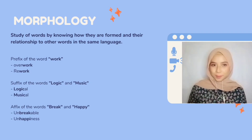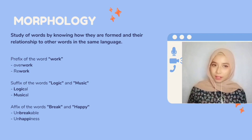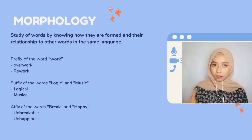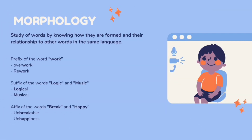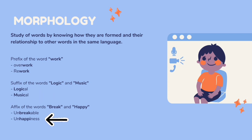The next is morphology. Basically, morphology is a study of words by knowing how they are formed and their relationship to other words in the same language. For example, the use of prefix on the word 'work' gives us 'overwork' and 'rework.' The suffix on the word 'logic' gives 'logical,' and on 'music' gives 'musical.' For affixes, the word 'break' becomes 'unbreakable,' and 'happy' becomes 'unhappiness.'